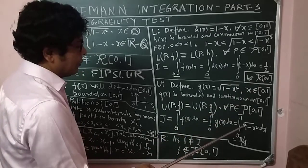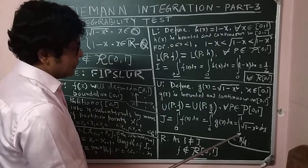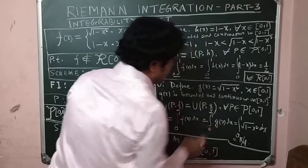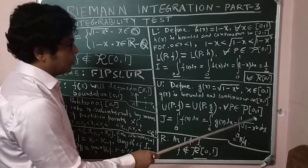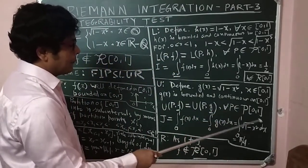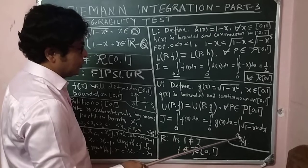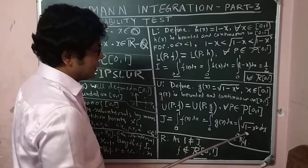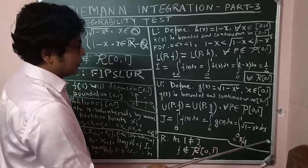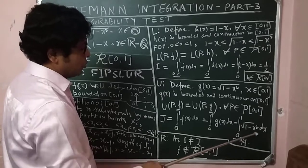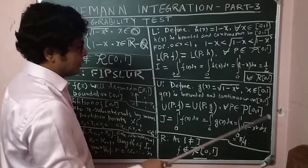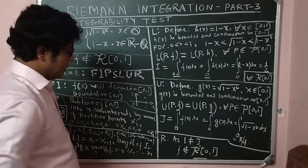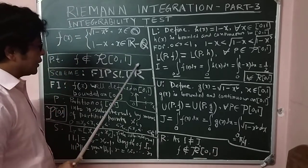g(x) is a bounded and continuous function and hence belongs to R[0,1]. I can find the Riemann integration: upper integral = ∫₀¹ √(1-x²)dx. This is standard form integration: [x√(1-x²)/2 + (1/2)sin⁻¹(x)] from 0 to 1. The answer is π/4.